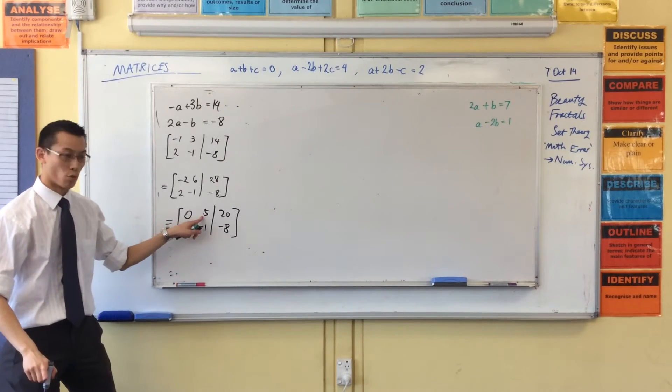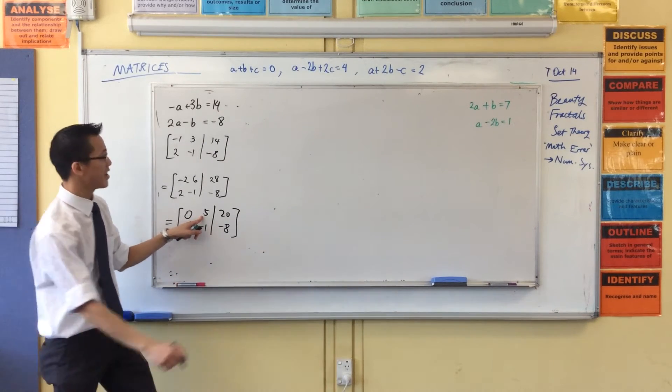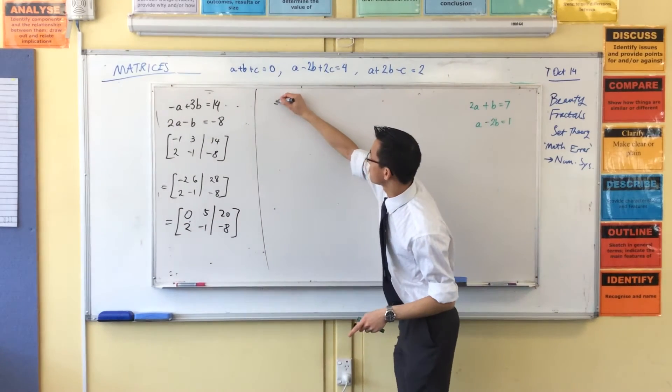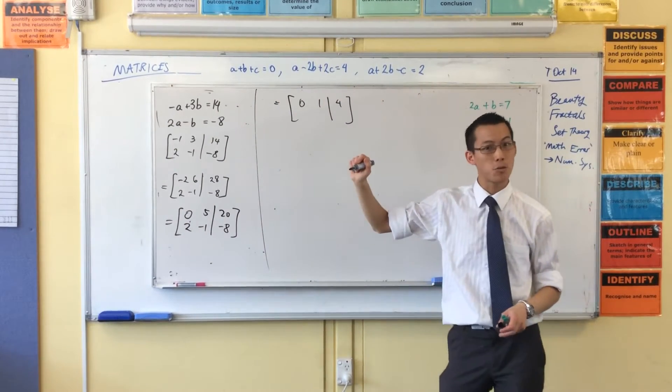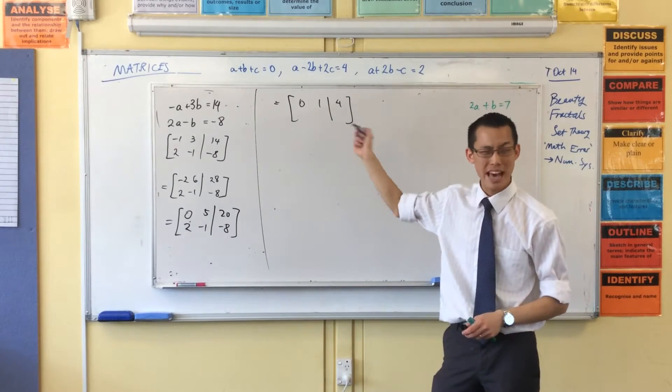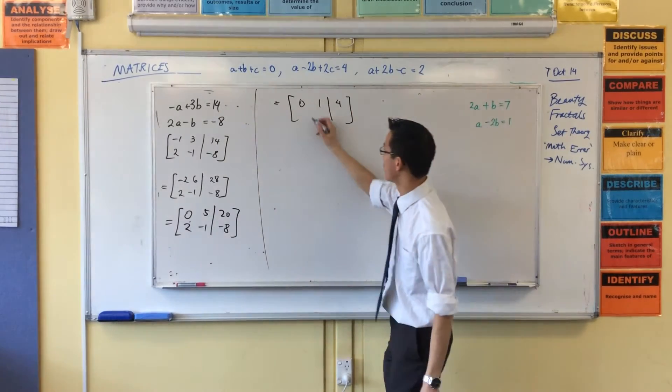One step to get this variable. What do I do? Excellent. Let's divide through. Zero, one, four. So I've solved one, and I'm going to use that constant to solve the other ones.